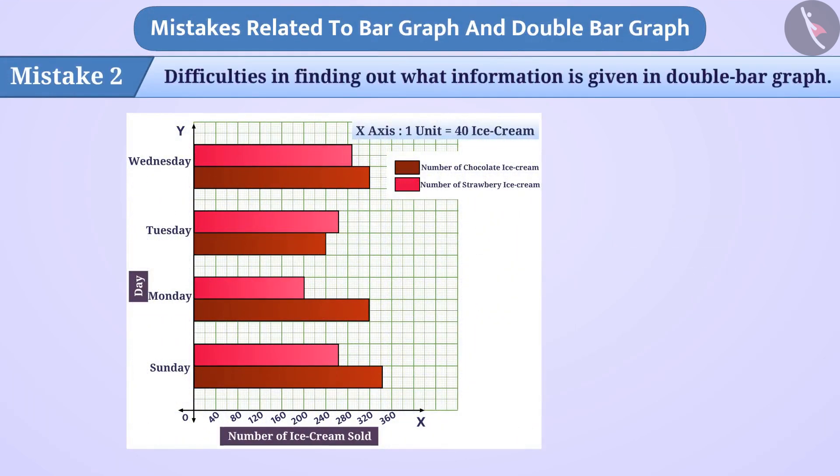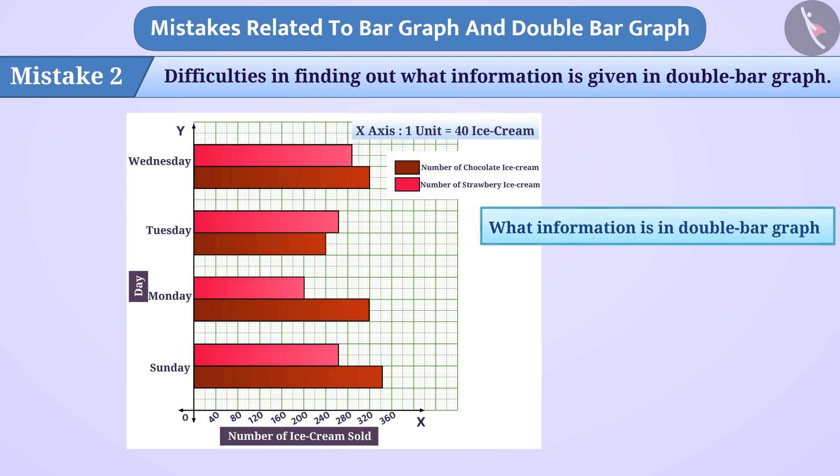Mistake 2. Some children have difficulties in finding out what information is given in the double bar graph. For example, if they are asked what information is shown in double bar graph, then they are not able to answer it.